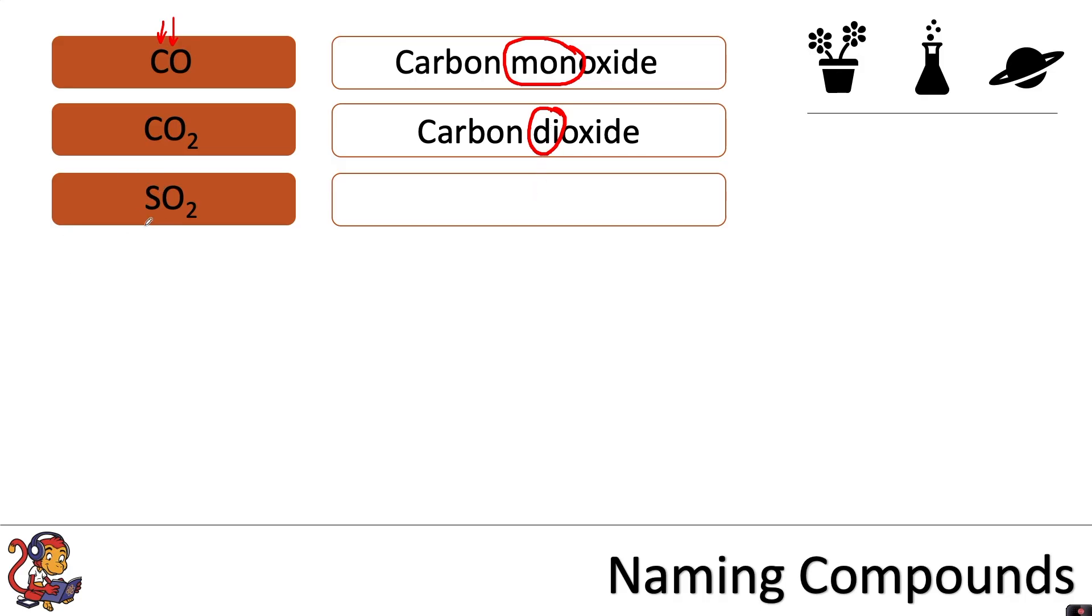You might be able to guess what this one's going to be called because it's sulfur bonding with two oxygens, and because it's two oxygens, this one is called sulfur dioxide. There are compounds that have different endings that I'm sure you'll come across later on in the course.